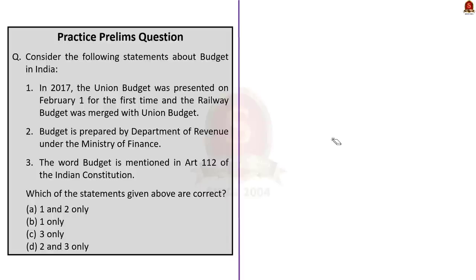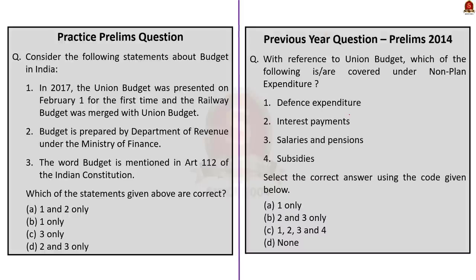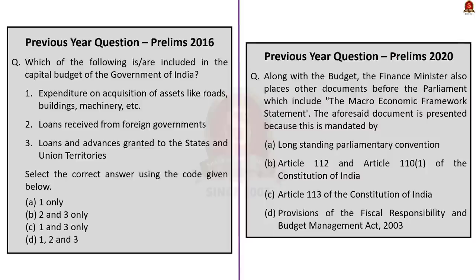The first question is about budget. Every year we take notes about the union budget before writing UPSC Prelims, but we should also give equal importance to the basic facts about budget. In the past, UPSC has asked many times about the budget's static portion — in 2014 about non-plan expenditure, in 2016 about the capital part, and in 2020 about documents presented along with the budget. So this year also, we can expect a question about the basics of budget.